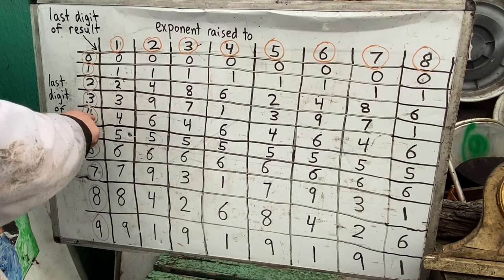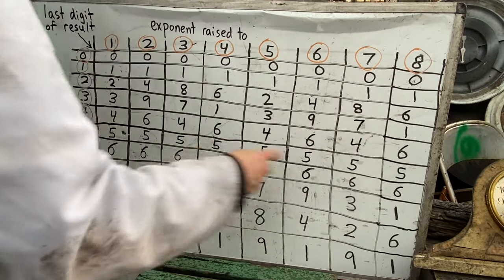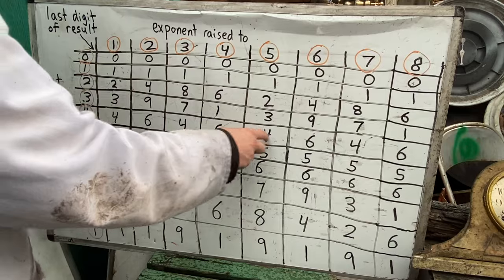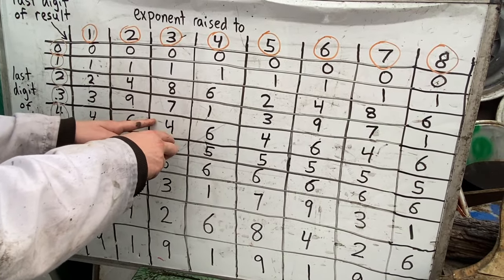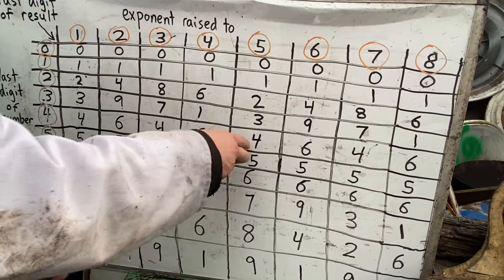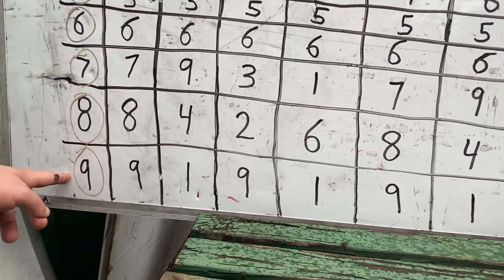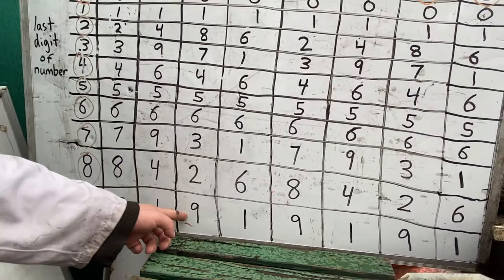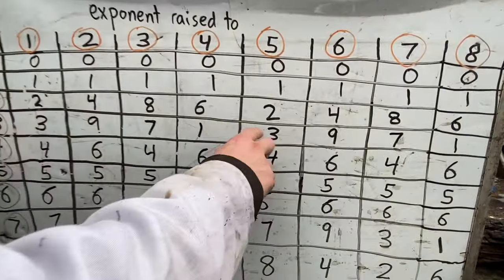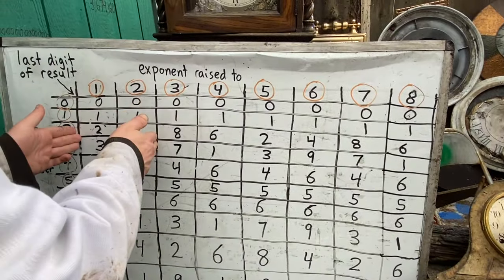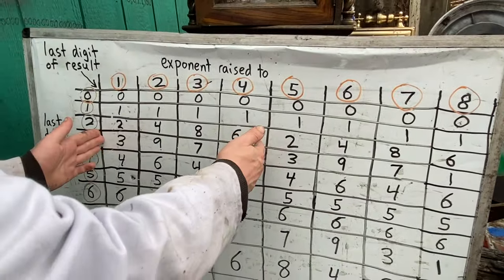We can also notice that although some numbers like 4 don't have a singular ending digit when raised to exponents, they do alternate between a cycle. 4 to the first power is 4, then 16, then 64, 256, and the last digit goes back and forth between those. Similarly, numbers ending in the digit 9 when raised to different powers will end in either the digit 9 or 1 in an alternating fashion. But what about these ones that look a little more chaotic? They might look random until you expand how big of a pattern you're looking for, and then you'll see that they do have a cycle of their own, just one of length 4.